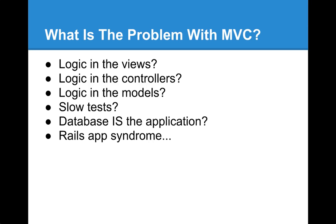One day everyone got together and said, fat controllers are bad, skinny controllers are good, all of our logic will go into the model, because it's not supposed to go in the view, and it's not going to go into the controller, so it must go in the model, right? Because you have three things: M, V, and C. So, if V and C are out, M is where all the logic goes. So you get fat models.